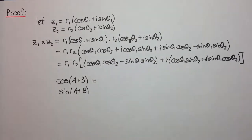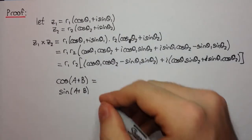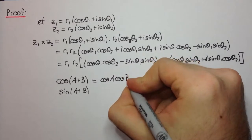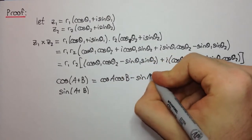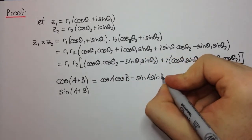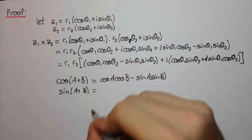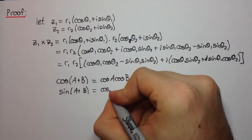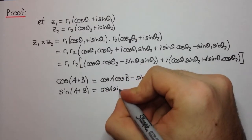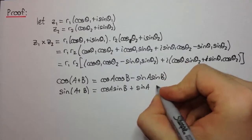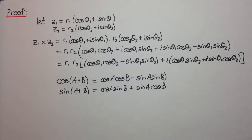Right? So what was the expansion of cos of A plus B? Well that was cos A cos B minus sin A sin B. And what about sin of A plus B? Well, that was cos A sin B plus sin A cos B.